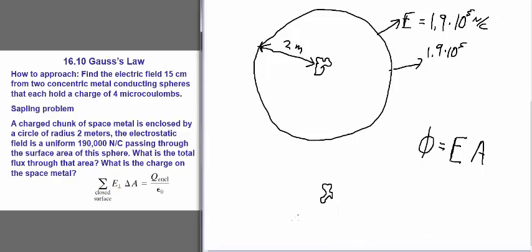But back to the problem at hand here. Part one is to just find the flux, which is field times area. And we're told that the field 2 meters from the chunk is this value, 190,000 newtons per coulomb.